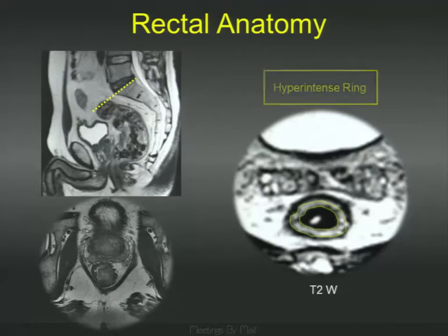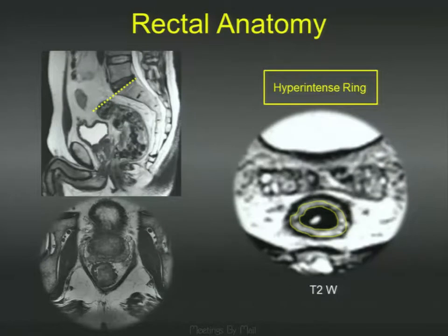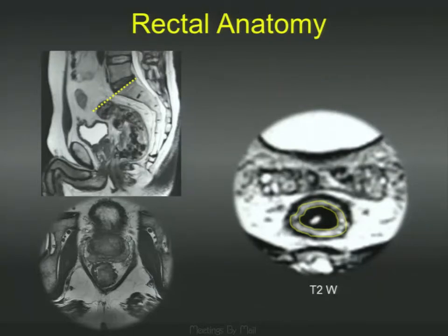The main sequence on MR that we use for staging rectal cancer is the T2-weighted sequence. On the T2-weighted sequence, there are two rings you're trying to identify: the inner hyperintense ring, or bright ring, which is essentially a combination of the mucosa and the submucosa, and the outer dark ring, or hypointense ring, which is the muscularis propria. That outer ring is very important for local staging in rectal cancer.